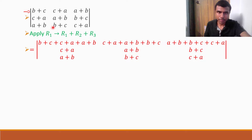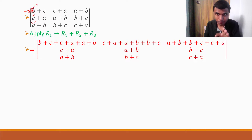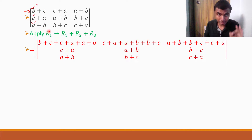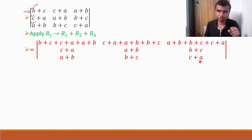If I apply that operation, in place of B plus C, I'll get B plus C plus C plus A plus A plus B. Only R1 will get changed. In the second element's place, I'd get B plus C plus C plus A plus A plus B. Likewise, in place of the third element, I'll get C plus A plus A plus B plus B plus C, and in place of A plus B, I'll get A plus B plus B plus C plus C plus A.